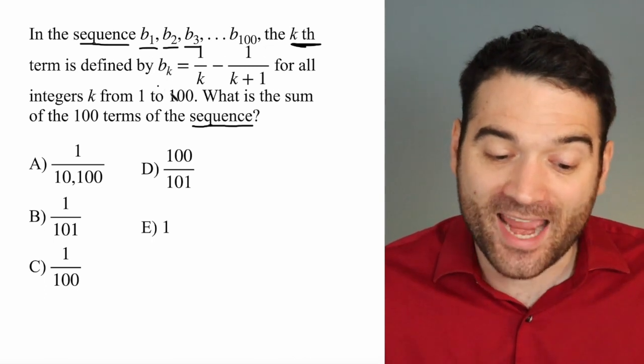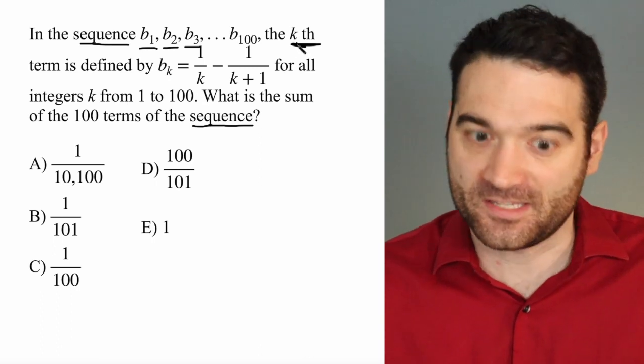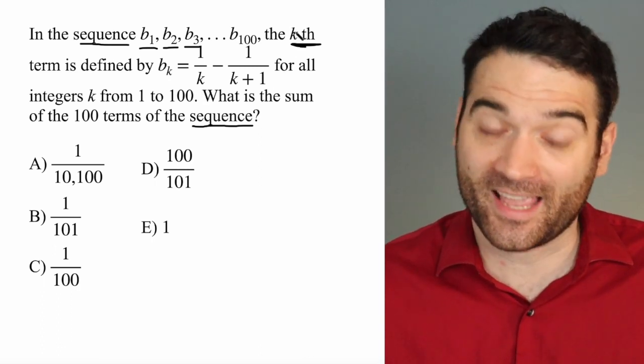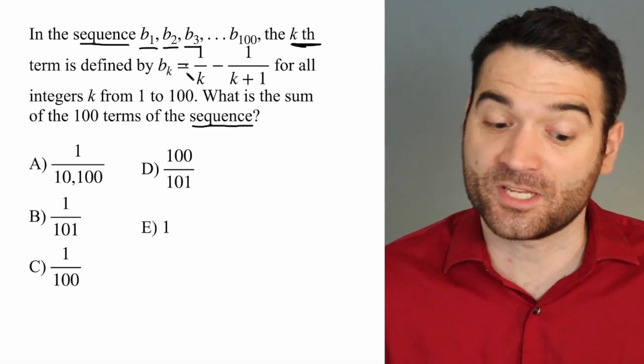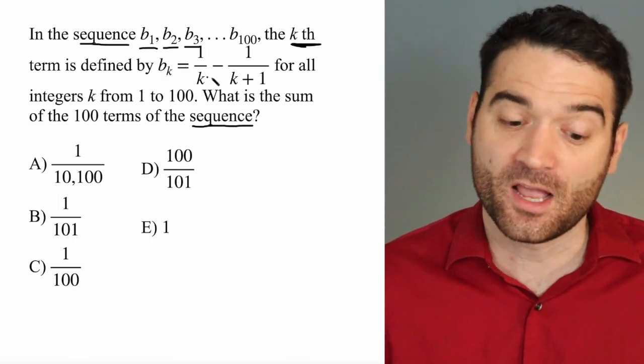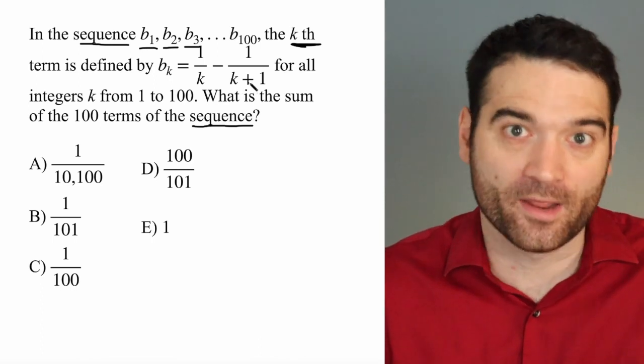This is a way to find a particular term. Let's say we wanted to find the 56th term. That would mean that k was equal to 56. So it would be B sub 56, the 56th term, is equal to 1 over 56 minus 1 over 56 plus 1.